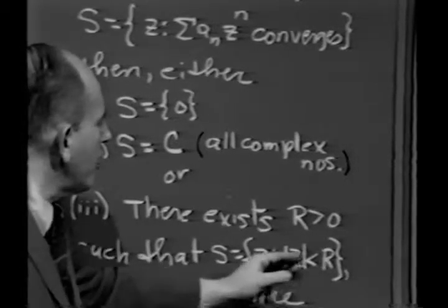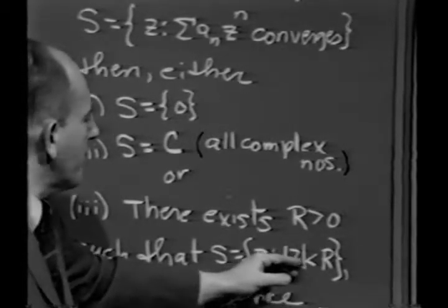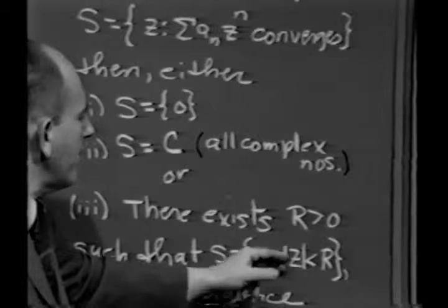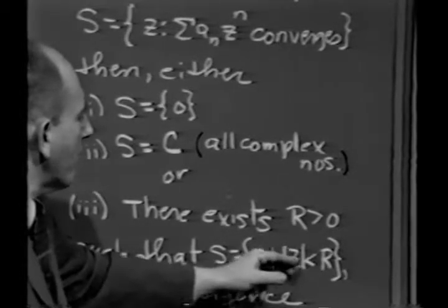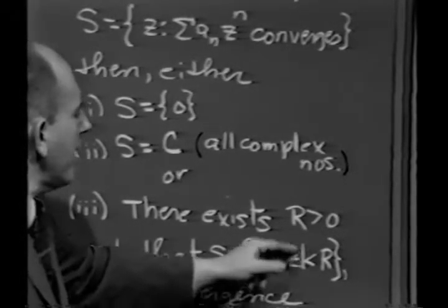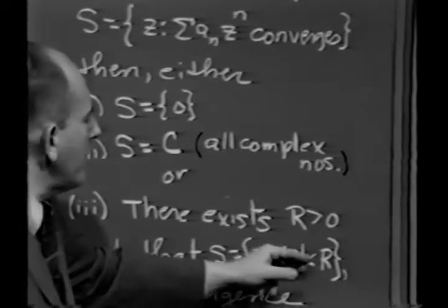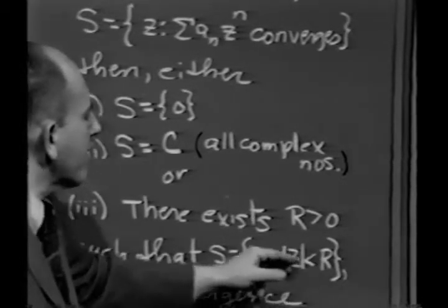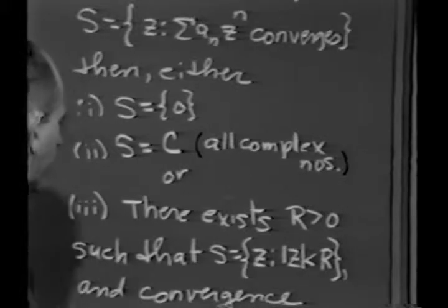And by the way, what does this mean geometrically? The absolute value of z is the magnitude of z. That's the distance of z from the origin. This says that z is within capital R of the origin. That means you're inside the circle centered at the origin with radius R.